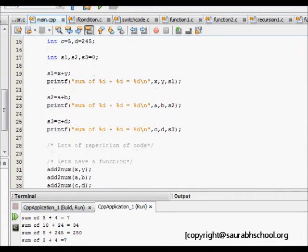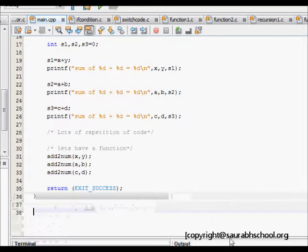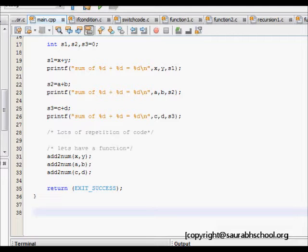So now coming to how to solve this. The crudest method is we will define three numbers. So int s1, s2, and s3. So we define s1 and then simply we do s1 equals x plus y. And then we printf the sum of x and y is s1. Similarly, again we do the same thing for s2.